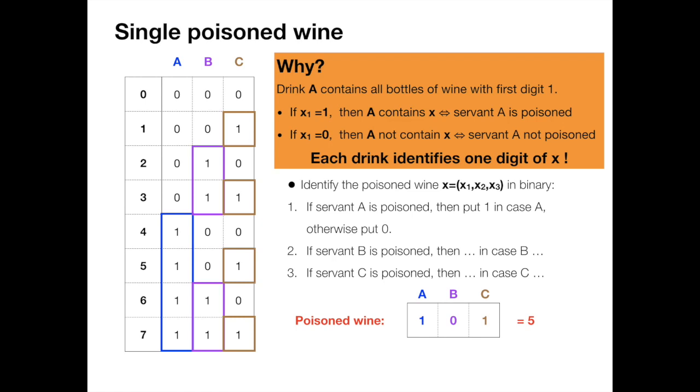So in this simple case we get the optimal answer, but the question becomes surprisingly difficult when we allow two wines to get poisoned.